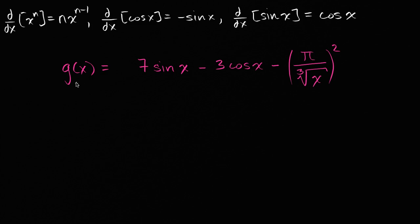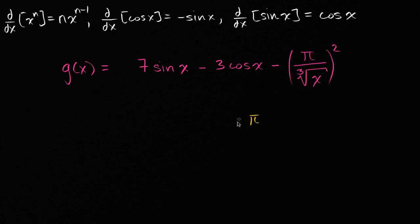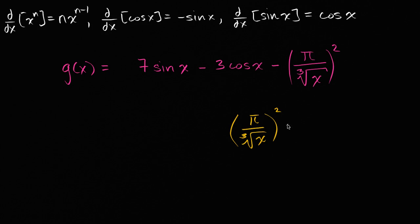Pause the video and see if you can do it. Probably the most intimidating part of this — because we know the derivative of sine of x and cosine of x — is this expression here, and we can just rewrite or simplify it a little bit. So: pi over the cube root of x, squared — well that's the same thing as pi squared over the cube root of x squared.